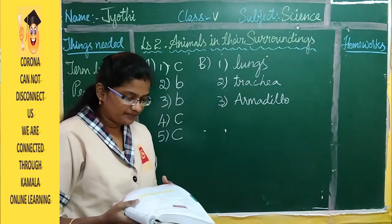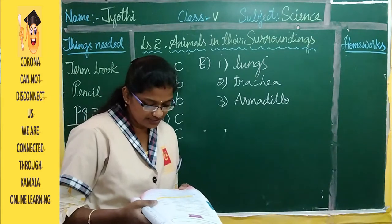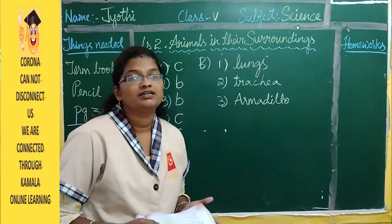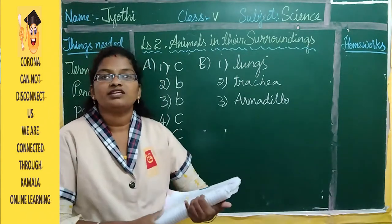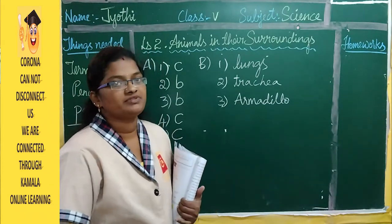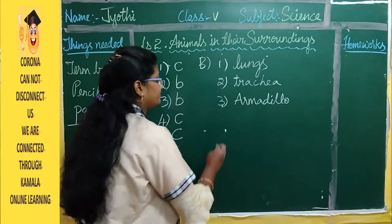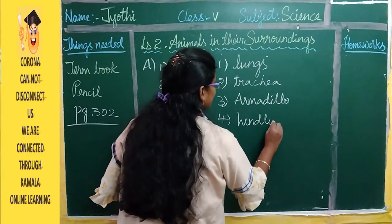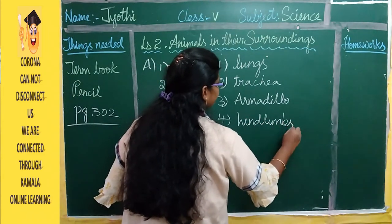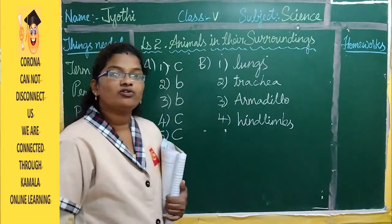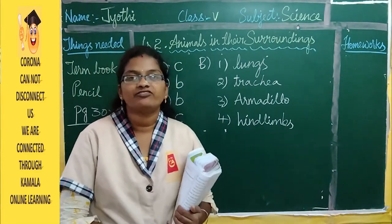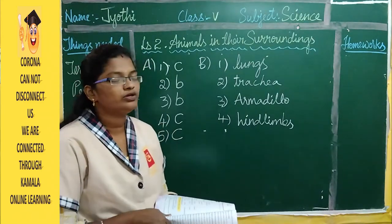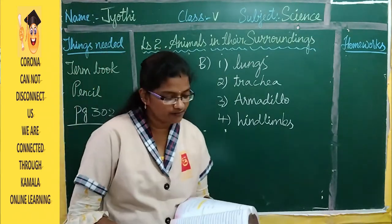Fourth blank: human beings use their hind limbs to walk, stand, run, and swim. Our forelimbs are our hands and our hind limbs are our legs, so with our hind limbs we are able to walk, run, and stand.